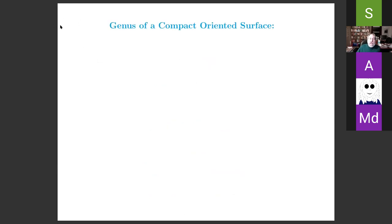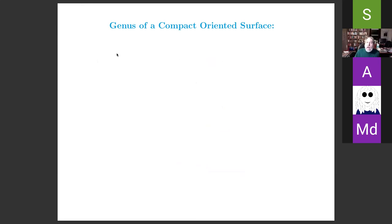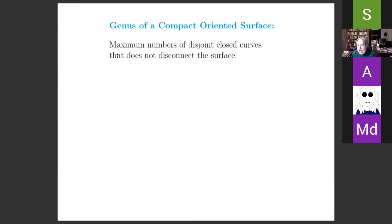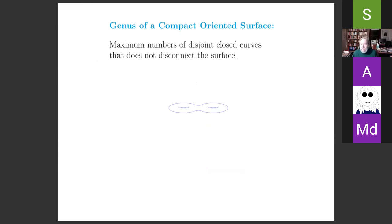I'd like to begin with the notion of the genus of a compact oriented surface. A possible definition is that it's the maximum number of disjoint closed curves you can draw on a surface that does not disconnect it. I'm going to concentrate on closed surfaces — compact surfaces without a boundary. Here I've drawn what's called a surface of genus 2.